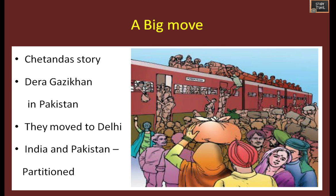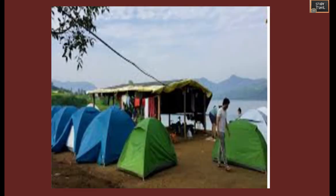Many people from India also moved to Pakistan, and from Pakistan many people moved to India, all because India and Pakistan were partitioned. After moving, Chetan Das's family stayed in a tent camp. They lived in tents set up on a ground - these were temporary houses arranged by the camp.